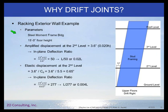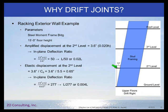So why are there drift joints? Here's one of our few slides with numbers. Let's look at a racking exterior wall example. If we have a steel moment frame building with a 15-foot floor height, and we designed our building to a 2% allowable drift, our amplified displacement at the second level would be 3.6 inches — that's 15 feet times 12 inches times 0.02. It would be another 3.6 inches at each level above, since we have the same floor height.